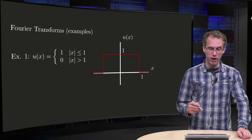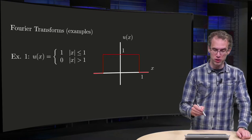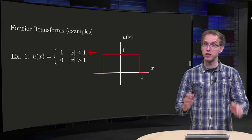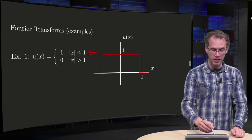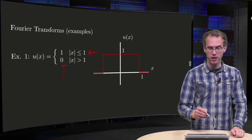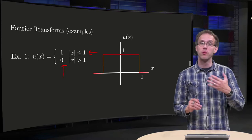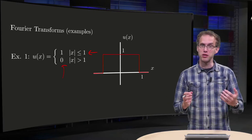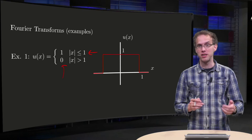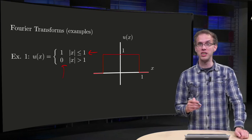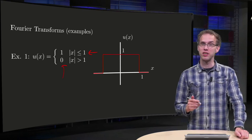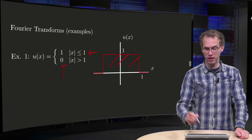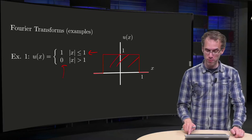First of all we have a block function — a function that is 1 if x is between minus 1 and 1, and 0 everywhere else. You can integrate it from minus infinity to infinity; that has to be bounded, and that is the case of course, because the integral from minus infinity to infinity is just the area over here, which equals 2.